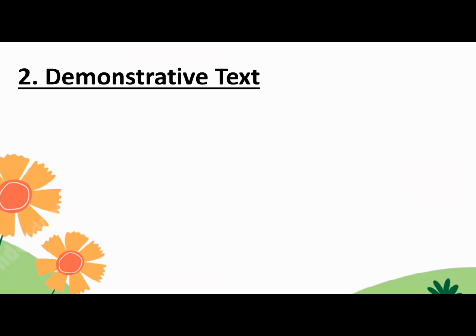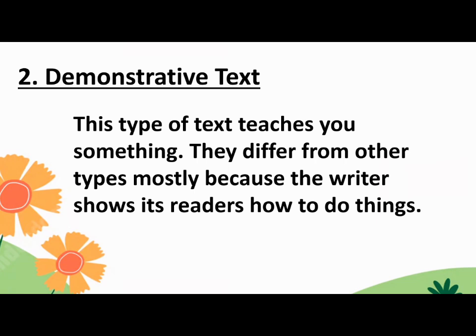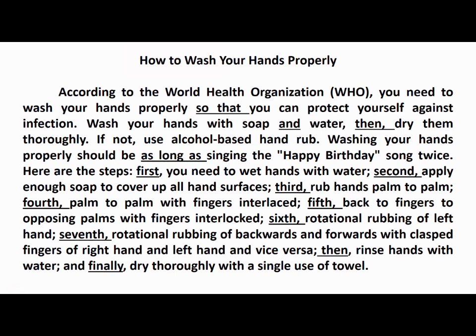Another type of speech or text is demonstrative. This type of text teaches you something. They differ from other types mostly because the writer shows its readers how to do things. Example - How to wash your hands properly: According to the World Health Organization (WHO), you need to wash your hands properly so that you can protect yourself against infection. Wash your hands with soap and water, then dry them thoroughly. If not, use alcohol-based hand rub.